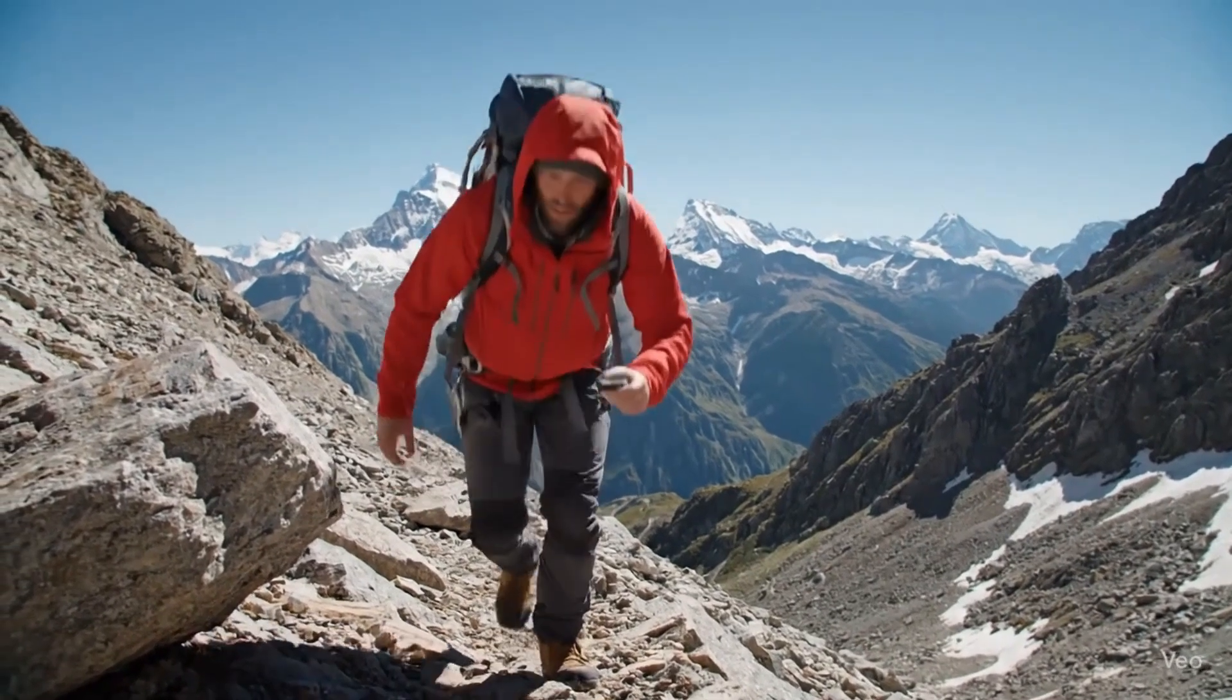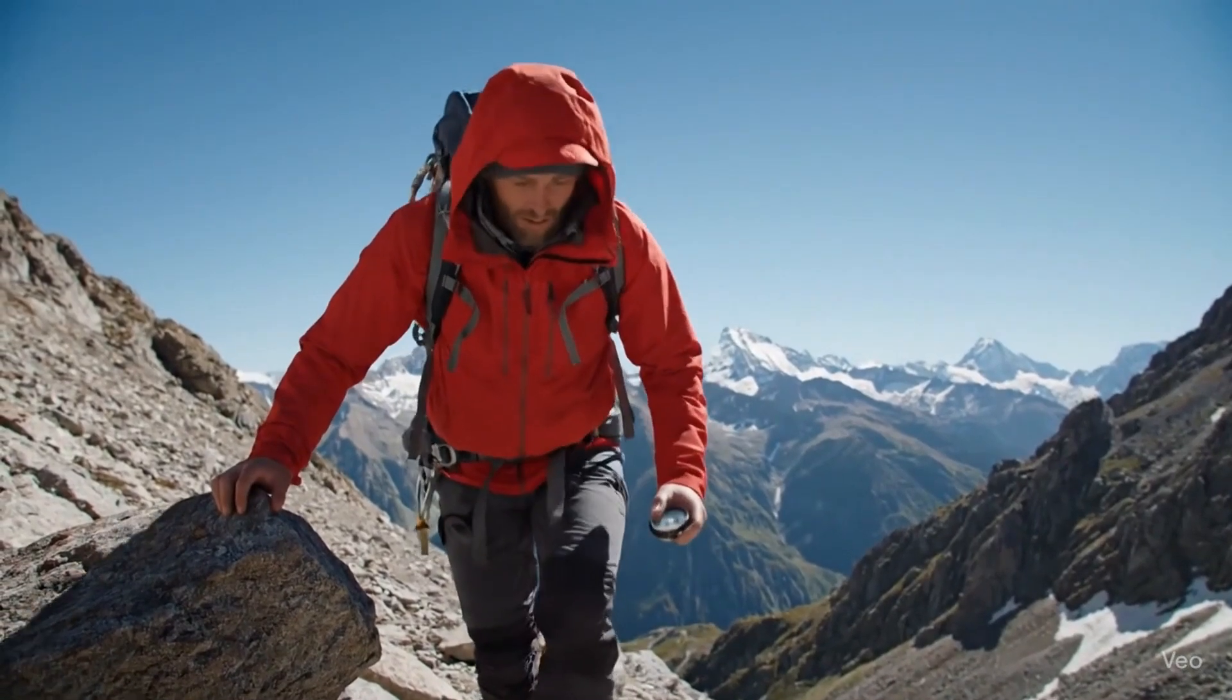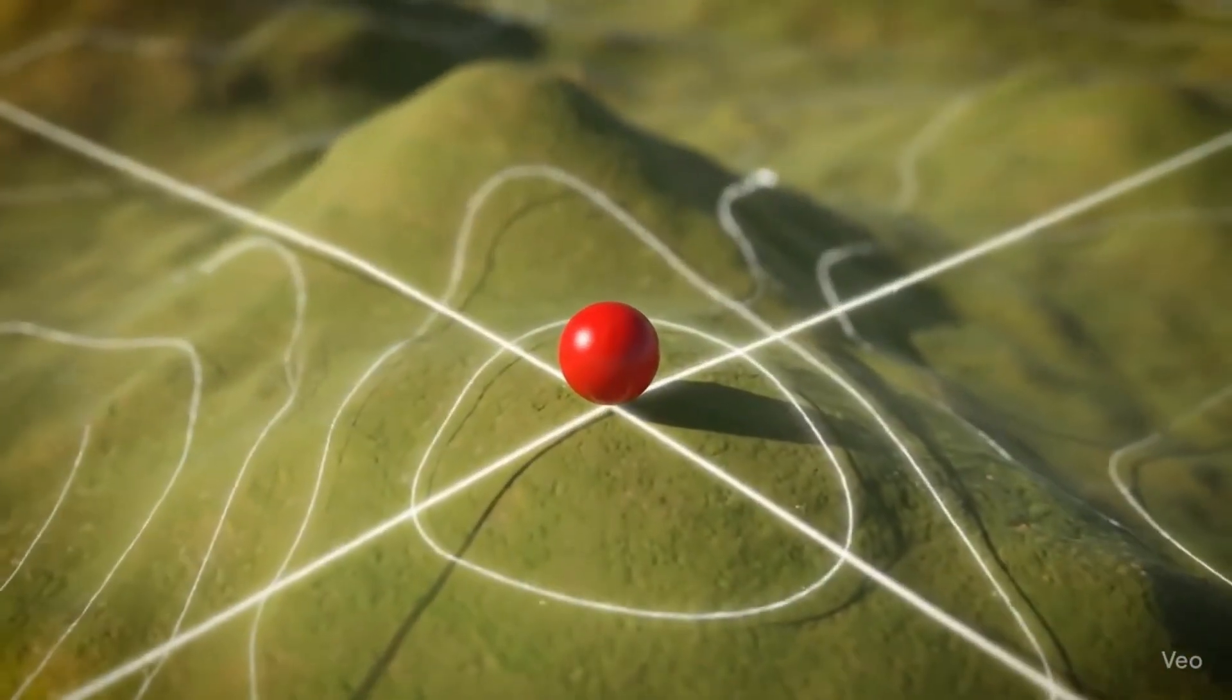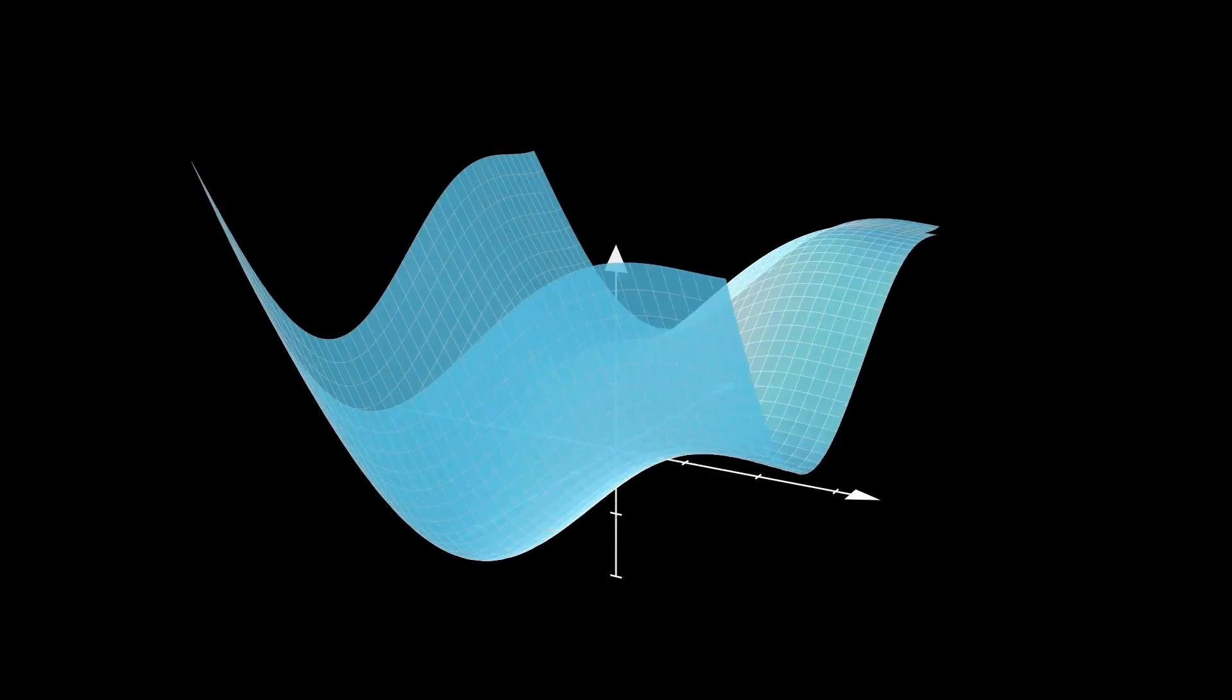You've probably heard this before: the gradient is like a hiker finding the fastest way down a mountain, or like a compass pointing to the steepest path. Honestly, those are lovely images, but if we only hold on to the metaphor we might miss what the gradient really is. It's not just a picture in your head, it's a vector with a very specific meaning.